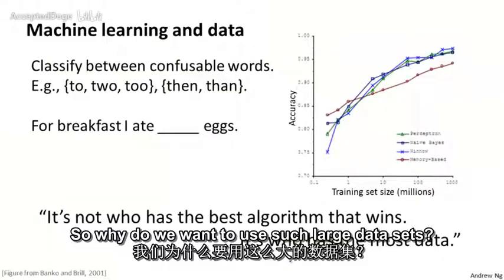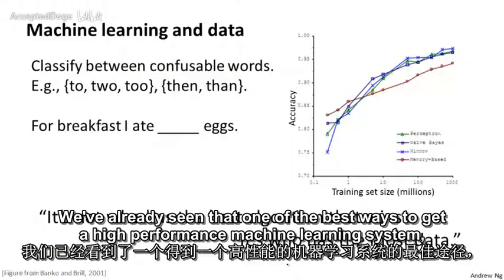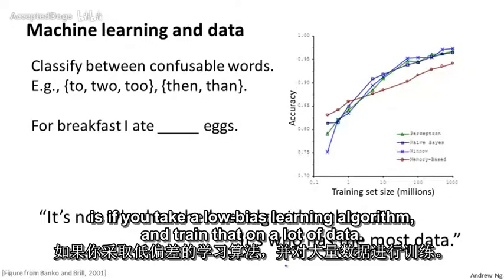So why do we want to use such large data sets? We've already seen that one of the best ways to get a high-performance machine learning system is if you take a low bias learning algorithm and train that on a lot of data.